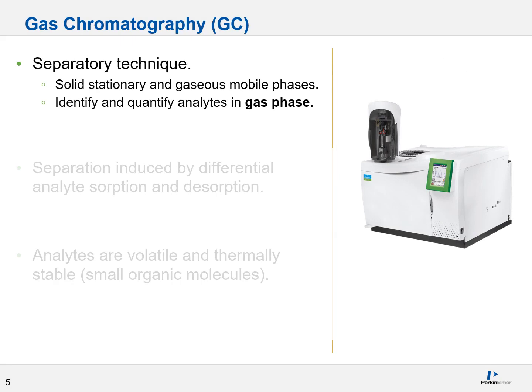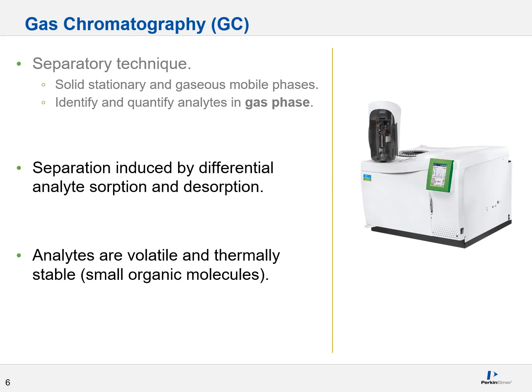Gas chromatography, or GC, like HPLC, is a separatory technique, except whereas HPLC is designed for liquid phase analytes, GC measures gas phase analytes. Separation is again induced by differential analyte sorption and desorption, but the column is designed for gas phase analytes. The analytes measured by this instrumentation are volatile and thermally stable, which lends itself mostly to small organic molecules.